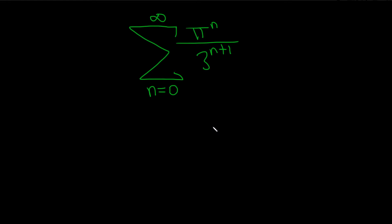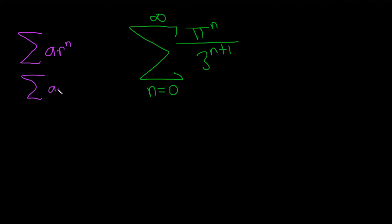In this problem we have an infinite series and the question is to determine if it converges or diverges, and if it converges, find the sum. So this appears to be a geometric series. Geometric series generally look like this — you have some number times r to the n, or maybe some number times r to the n minus 1. Something like this is considered geometric.